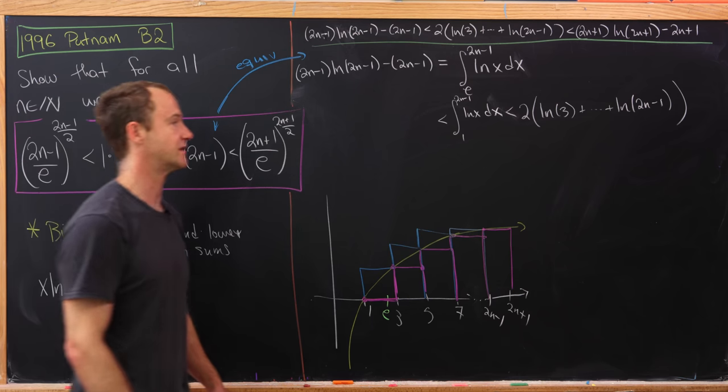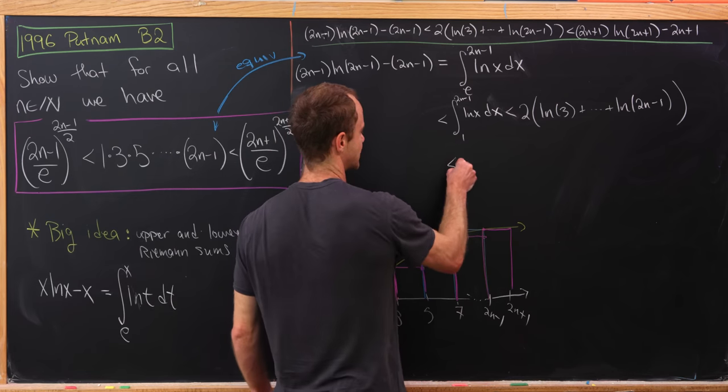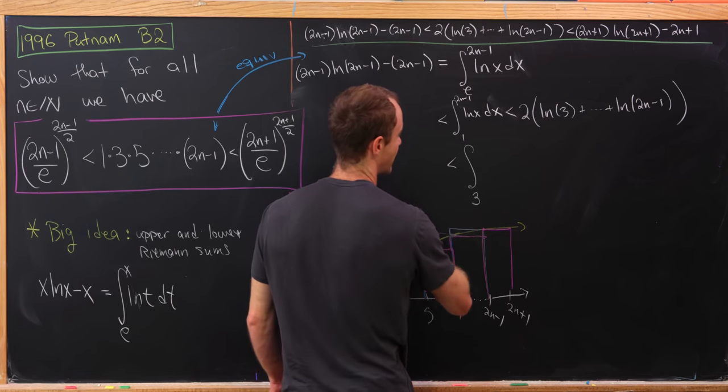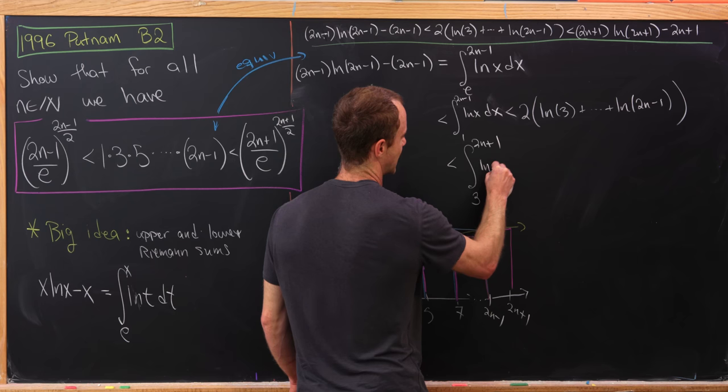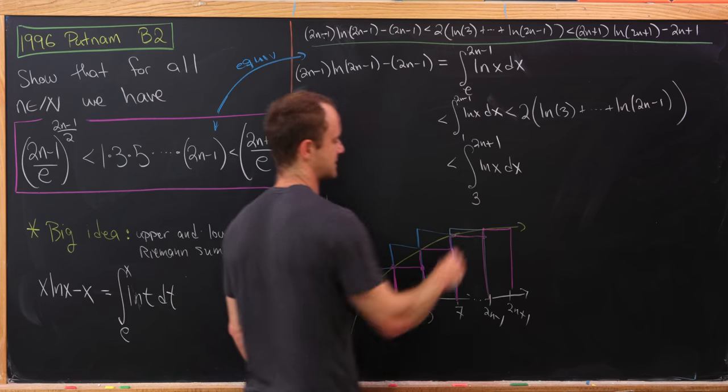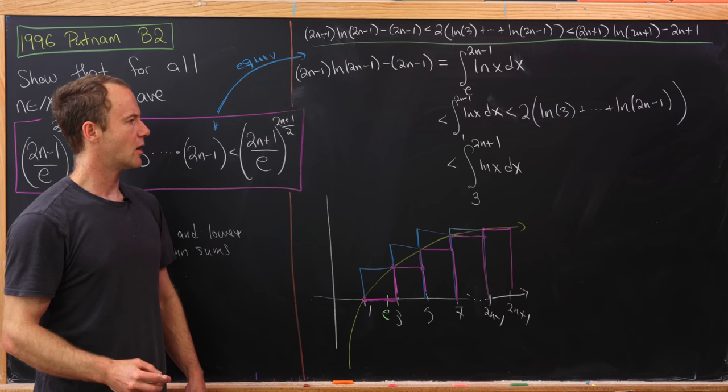And in fact, we might as well start the integral at 3 because we're just picking up a height of 0 up until that. So this, in turn, is going to be less than the integral from 3 up to 2n plus 1 of the natural log of x dx. Like I said, kind of for the same reason.